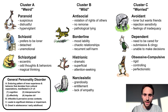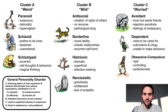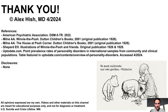Obsessive compulsive personality disorder describes those who are rigid, controlling, and perfectionistic, much like the uptight Rabbit, who gets overwhelmed if things don't go exactly to plan. That's the end of this talk. I hope the simplification makes it easy to remember the personality disorders. Thank you.